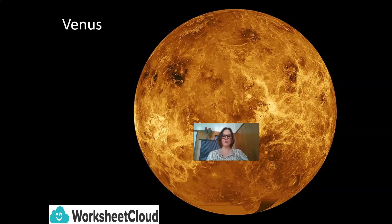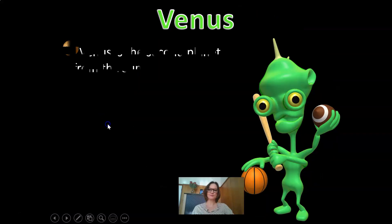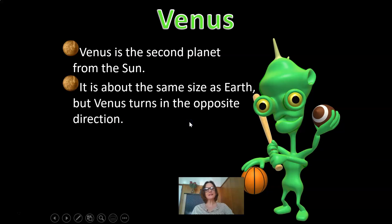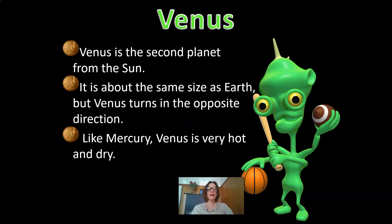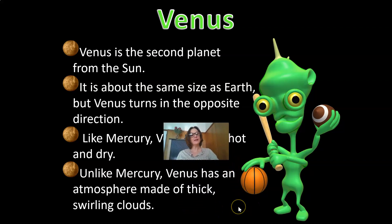Venus is the second planet from the Sun. It is about the same size as Earth, but Venus turns in the opposite direction. Like Mercury, Venus is very hot and very dry. But unlike Mercury, Venus has an atmosphere made of thick, swirling clouds.